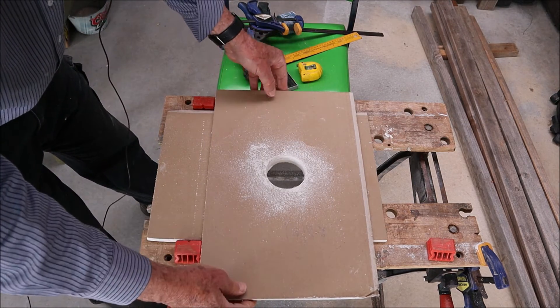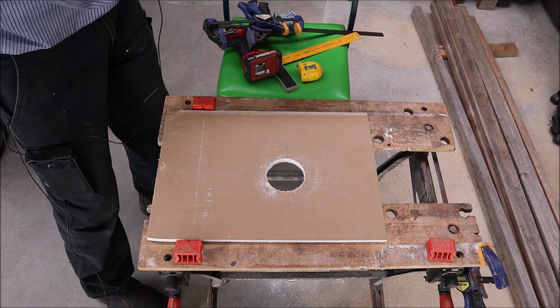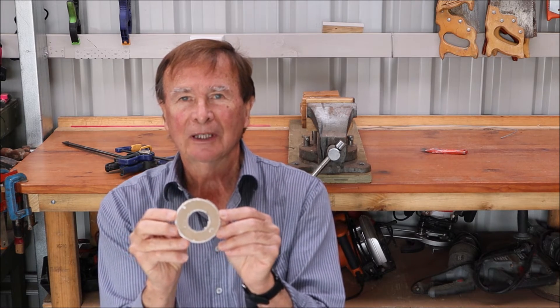There we go. So if we take our clamps off, this is our template and that's our new hole. It's very neat and it's pretty central as well. Now if you take a look at the offcut you can see it's pretty central, the new hole that we've drilled, so that all works pretty well.